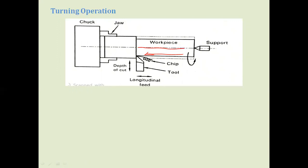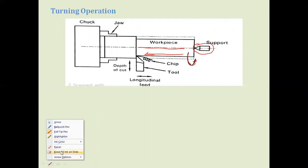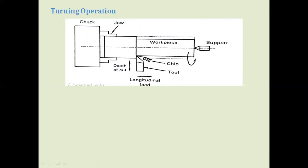In this turning operation, support is provided by the tailstock dead center. An important thing to always remember: in the lathe machine the workpiece is under continuous rotation — always show this arrow mark indicating rotation, or you may lose marks. As the cutting tool moves from one end to the other, metal is removed in the form of chips, and the feed for turning is in the form of a longitudinal feed.